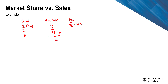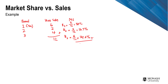Brand one has six out of 12, which is 50%. Brand two has two out of 12 — that's one out of six, about 16.7%. Brand three has four out of 12, which is about 33.3%. All together, these market shares add up to 100%.